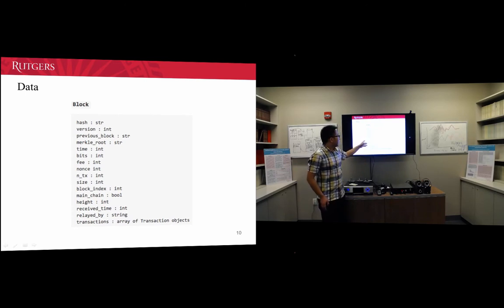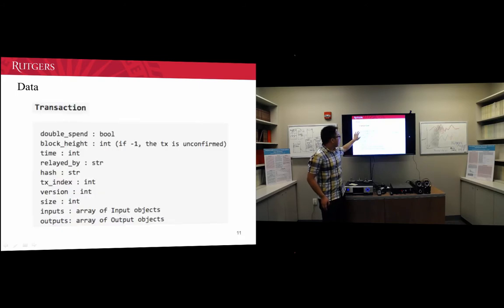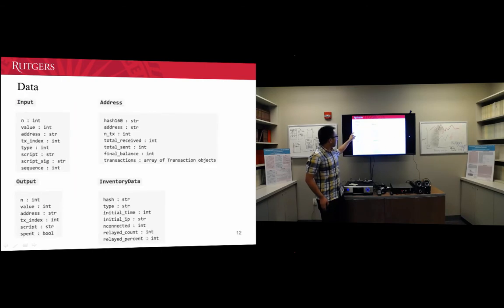For example, here is a block. We collect the blocks and we have the transactions. For each transaction we have the inputs and outputs. We have the inputs and we can get the address of the inputs and the address of the outputs, and the money transferred—how much to other people.